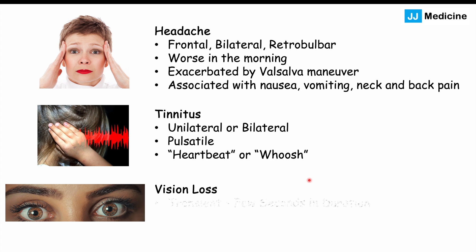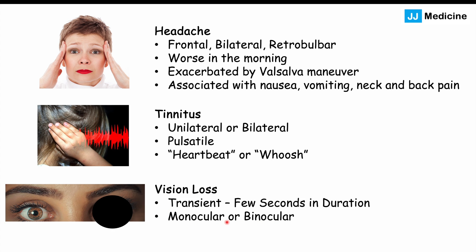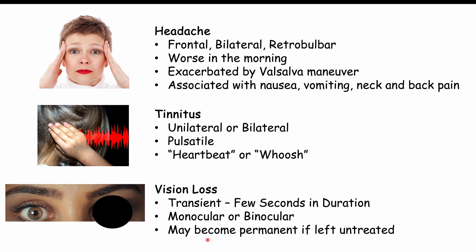Vision loss can also occur. It can be transient, lasting only a few seconds, and may appear as a graying or blacking out of parts of the visual field. It can be monocular or binocular, and may become permanent if left untreated. Up to 60–70% of patients will have some type of visual loss, especially transient. Visual loss can be exacerbated by orthostatic movements such as bending over or standing up quickly.